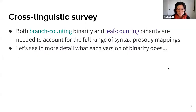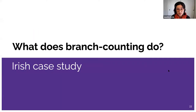To sum up, we found that both branch counting binarity and leaf counting binarity are needed to account for the full range of syntax-prosody mappings in the survey. Now let's see in more detail what each version of binarity does, starting with branch counting.